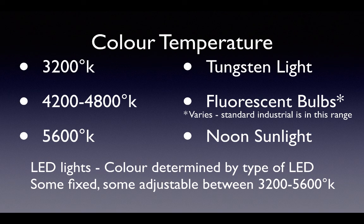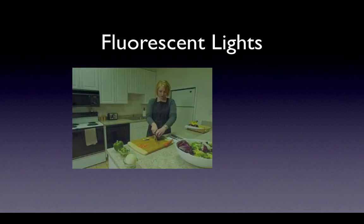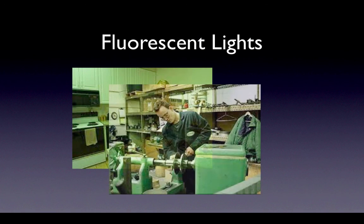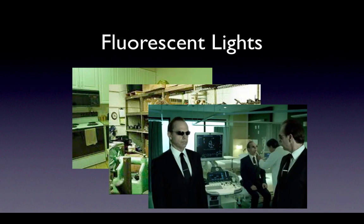Fluorescent lights come in a wide variety of color temperatures. The number given here is the standard for office buildings, hospitals, schools, etc. Fluorescent lights are bluish green. This is a very uncomfortable color. It can be used to make you feel ill or imply a hospital if you're lighting a set.